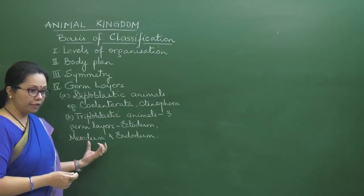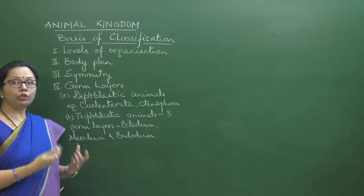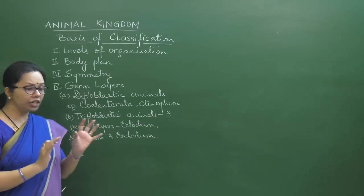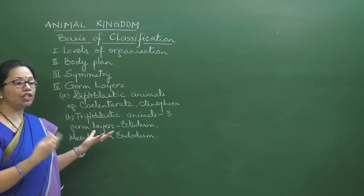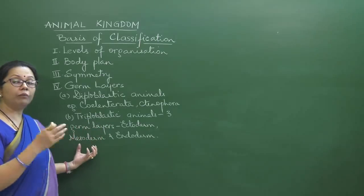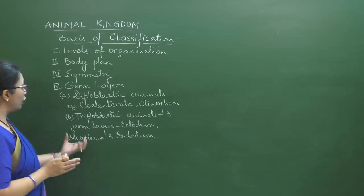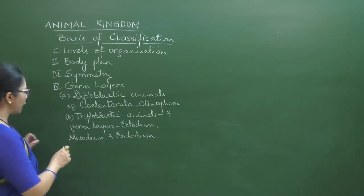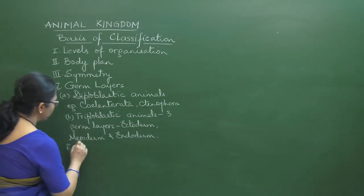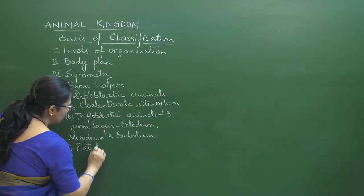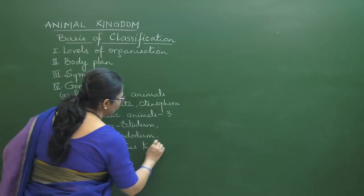Mesoglia and mesoderm are not the same — mesoglia is an undifferentiated gelatinous mass with no cells and cannot be counted as a germ layer. Mesoderm has actual cells and is therefore a proper germ layer. For triploblastic animals the examples start from Platyhelminthes going up to Chordata.